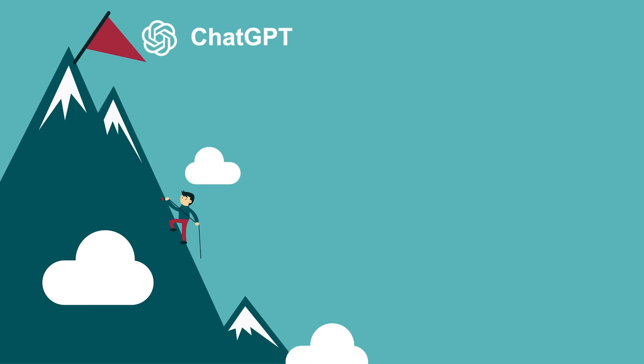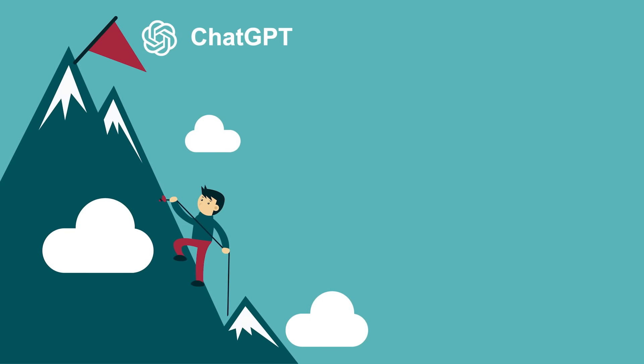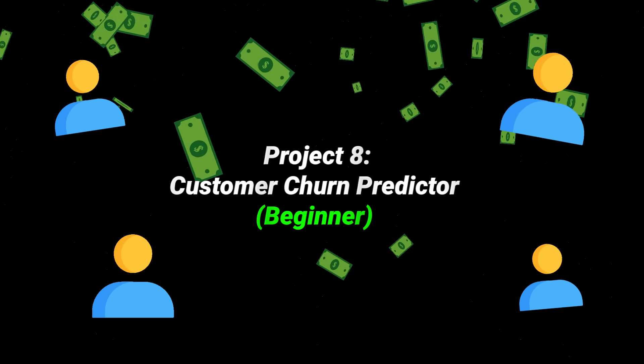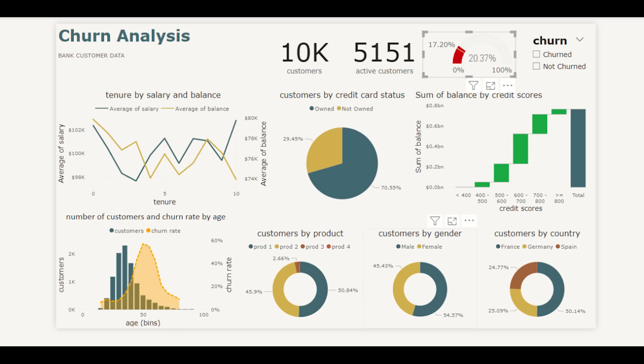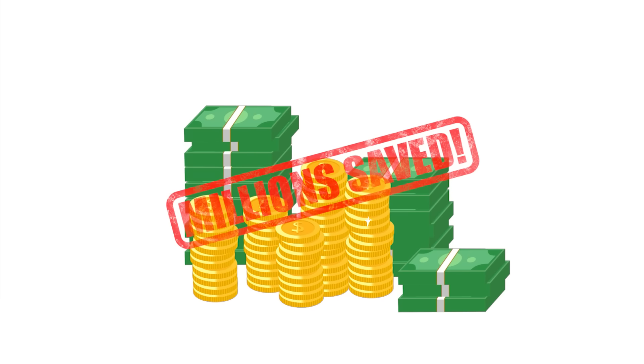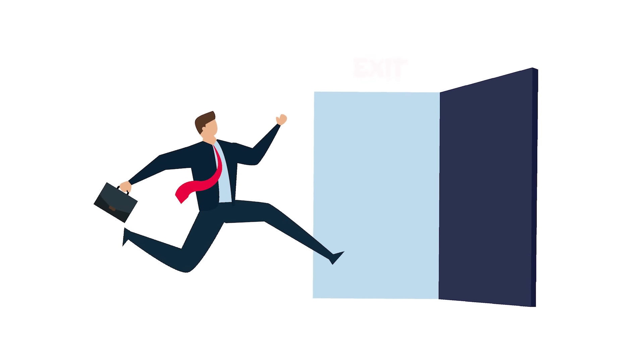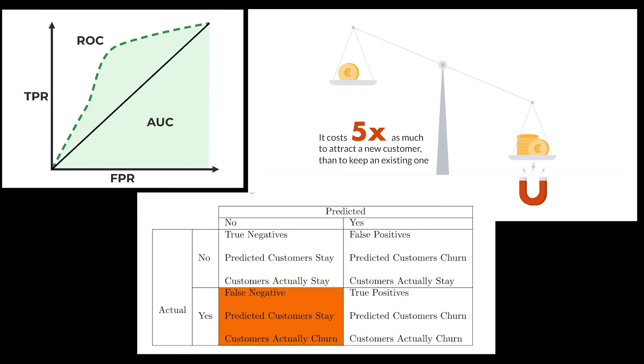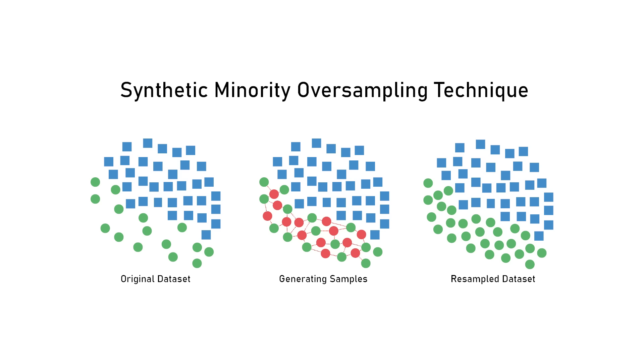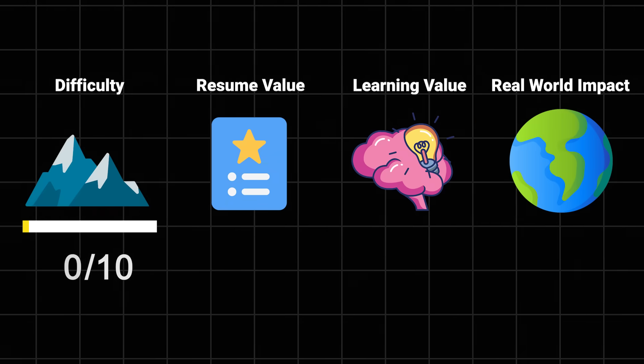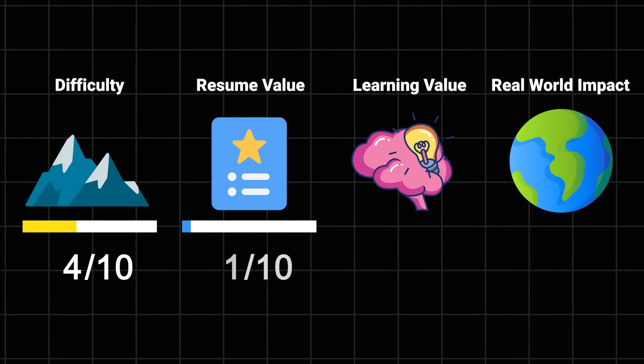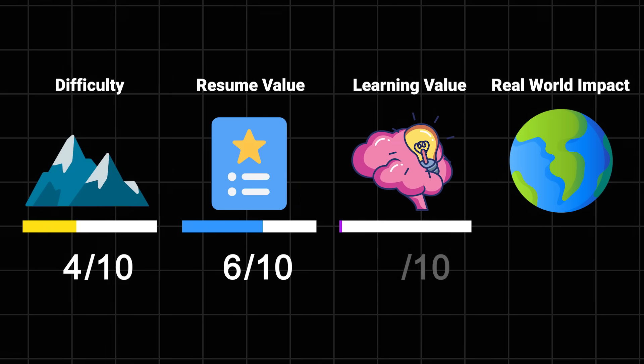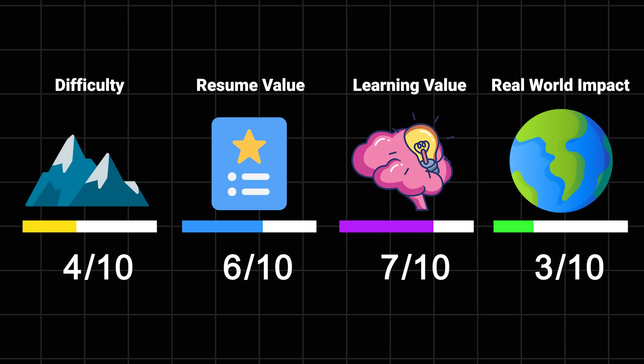Customer churn predictor. This one's a business favorite, and for good reason. Instead of just playing with random datasets, you'll build something that could actually save a company millions. You'll predict which customers are about to leave before they actually do. The cool part: you'll learn to handle imbalanced datasets - because surprisingly, not everyone quits a service at the same time - work with real business metrics, and maybe even use some fancy techniques like SMOTE. Difficulty: 4 out of 10. Resume value: 6 out of 10 because businesses love this stuff. Learning value: 7 out of 10. And impact: 7 out of 10 because who doesn't want to be the person who saved their company millions?